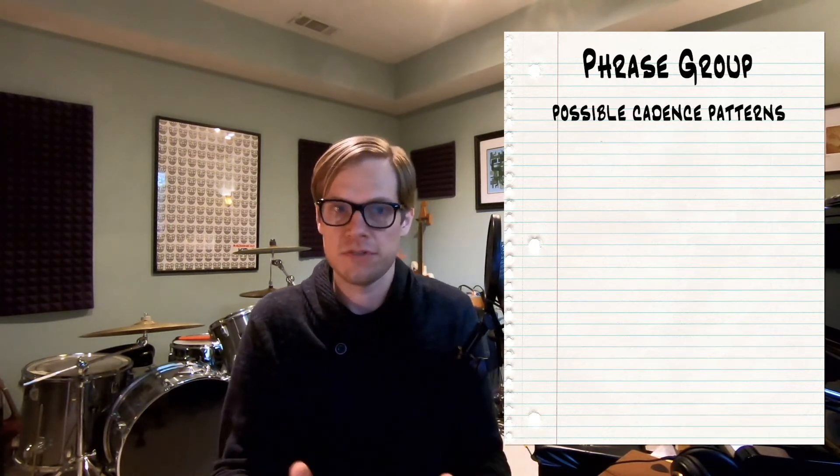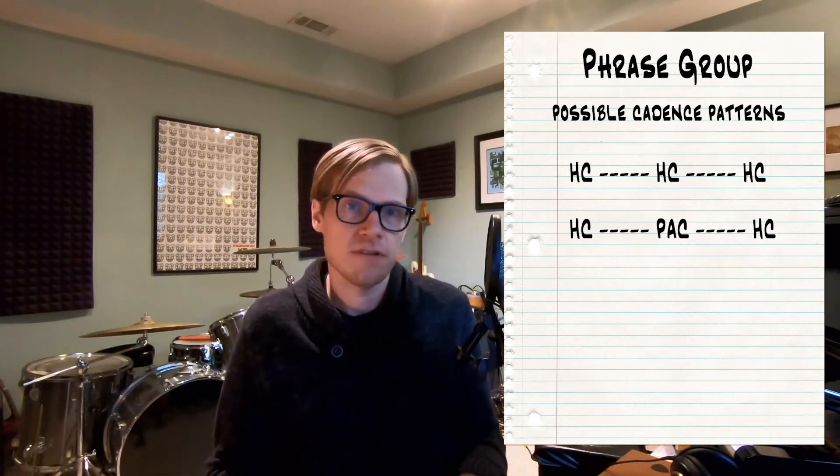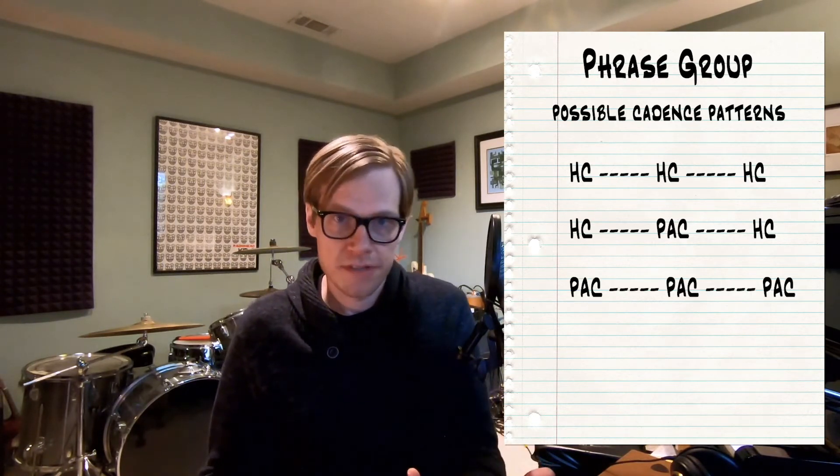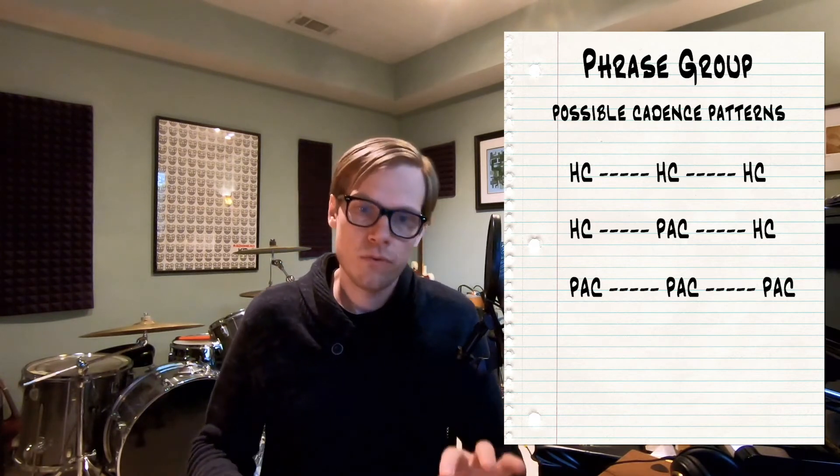When looking at a phrase group in terms of what cadences you see — because you do see cadences in a phrase group — it's more common for a phrase group to have just a bunch of half cadences. But a phrase group can also have a perfect authentic cadence and then a half cadence, and that's still a phrase group because it doesn't follow a weak cadence to strong cadence relationship. You could also have a perfect authentic cadence, perfect authentic cadence, perfect authentic cadence — and that would still be a phrase group, because again you don't have a weak cadence to strong cadence relationship.